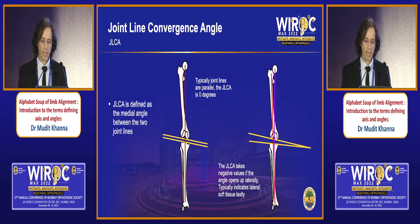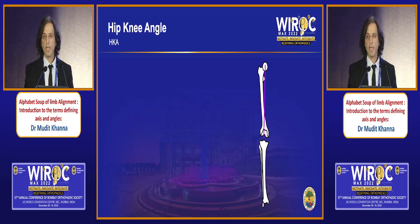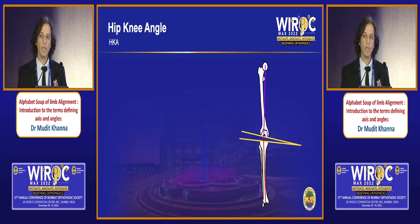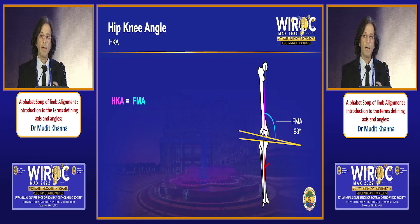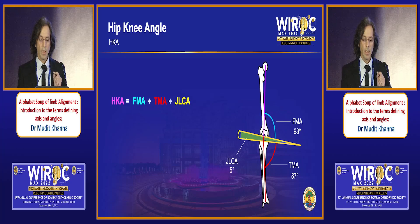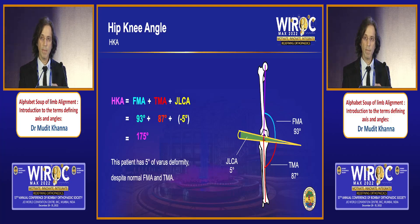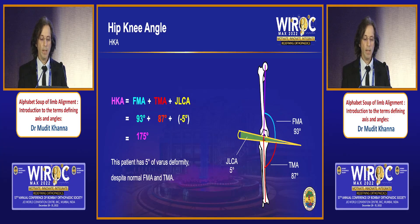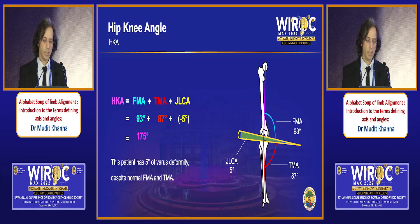Moving on to the HKA — the main angle we typically measure — we often measure the angle between the mechanical axis of the femur and the mechanical or anatomical axis of the tibia without taking into consideration the JLCA. The HKA is the sum of the Femoral Mechanical Angle (FMA) plus the Tibial Mechanical Angle (TMA), plus the JLCA, which typically takes a negative value if it opens up laterally. For example: an HKA of 93 + 87 − 5 = 175 degrees means the patient has a five-degree varus deformity.